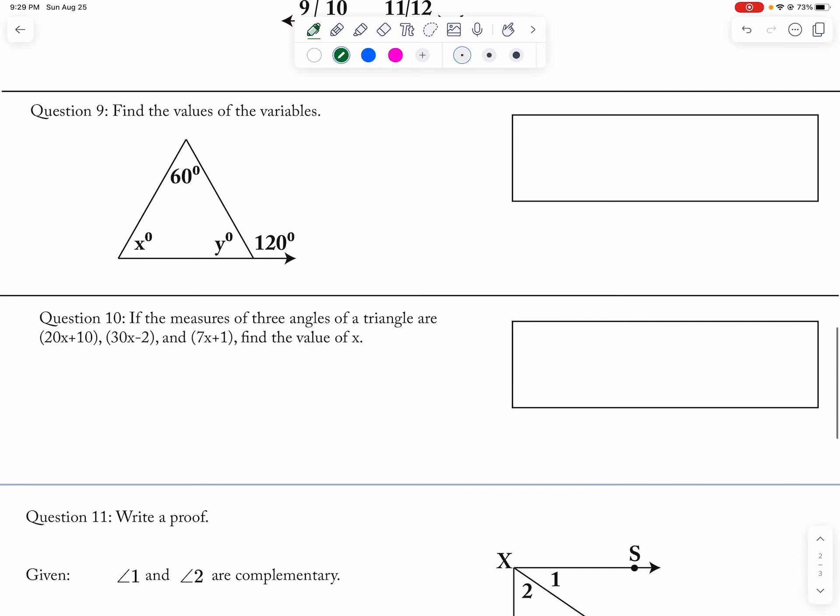Okay, and then 9: Y plus 120 is equal to 180, so Y is equal to 60. And then X plus 60 is equal to 120, so X is 60. So Y is equal to 60 and X is equal to 60.